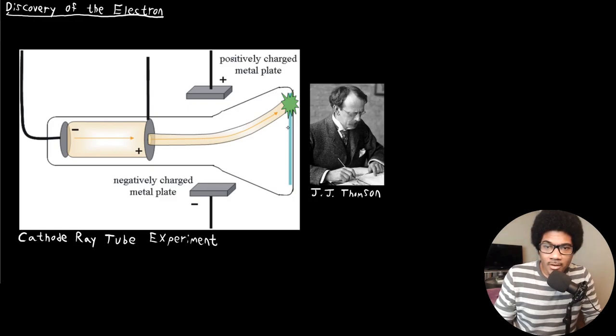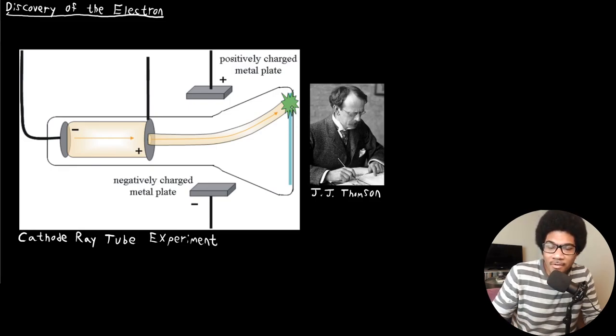And what J.J. Thompson wanted to do was to be able to figure out a little bit more about what this ray was that was produced in the cathode ray tube, this ray that goes from the cathode to the anode. So what he did was put a fluorescent screen toward the end, well past the anode. And he applied an electric field. So here in the figure, we have these two charged metal plates, one being positively charged and one being negatively charged.